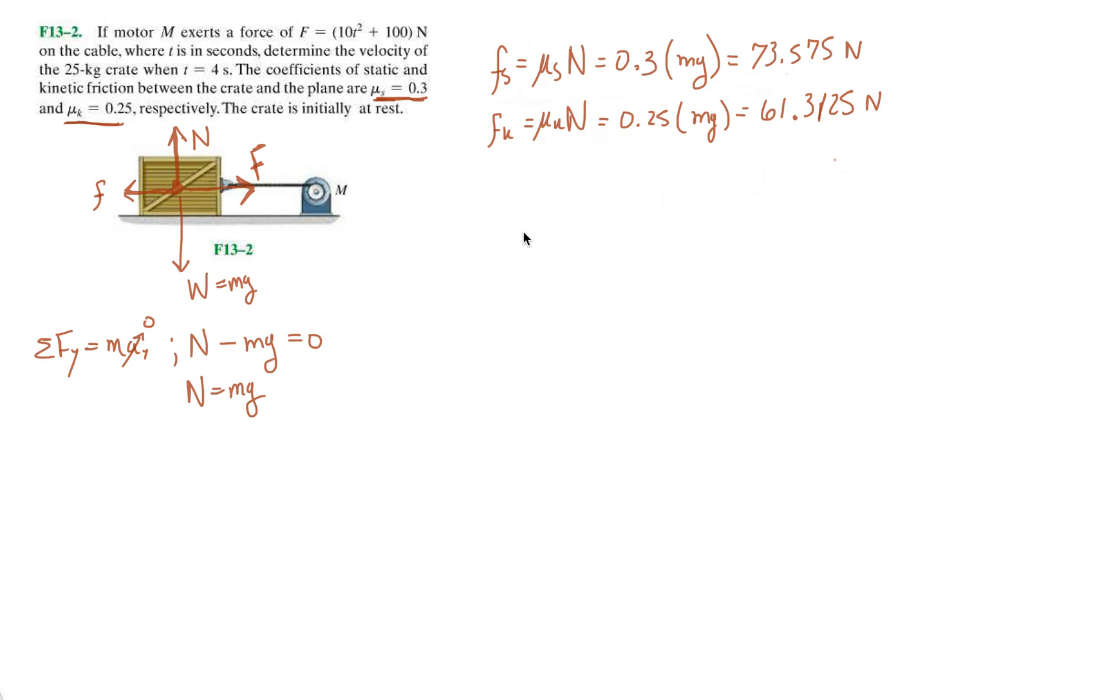Now, the force that they're applying is time-dependent. So F equals 10t squared plus 100. So if I evaluate the force at time equals zero, so right at the beginning, T squared is just zero when you plug in zero for T, and then you get 100.